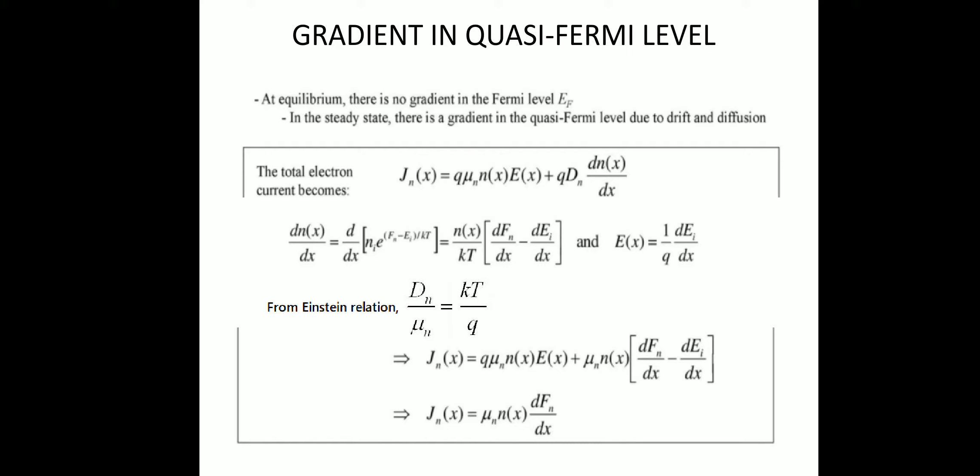We need to find the derivative of n(x) with respect to x. Taking the derivative of ni · e^((Fn − Ei)/kT) with respect to x, we get: ni · e^((Fn − Ei)/kT) · (1/kT) · d(Fn − Ei)/dx. Since ni · e^((Fn − Ei)/kT) equals n(x) itself, the result simplifies to: dn(x)/dx = (n(x)/kT) · (dFn/dx − dEi/dx). Additionally, we know that dEi/dx equals q·E(x), meaning the electric field E(x) = (1/q)·(dEi/dx).